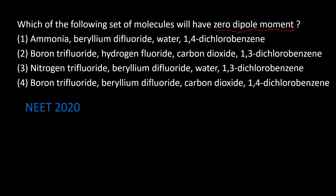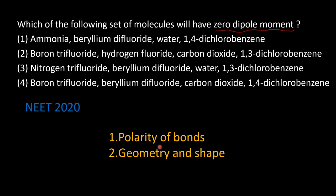Different sets of molecules are given and we have to find out which set has a zero dipole moment. For this we need to understand what is the polarity of a bond, what are polar molecules, how a polar molecule has a dipole moment, when it will have zero dipole moment, and how dipole moment is connected to geometry and shape.